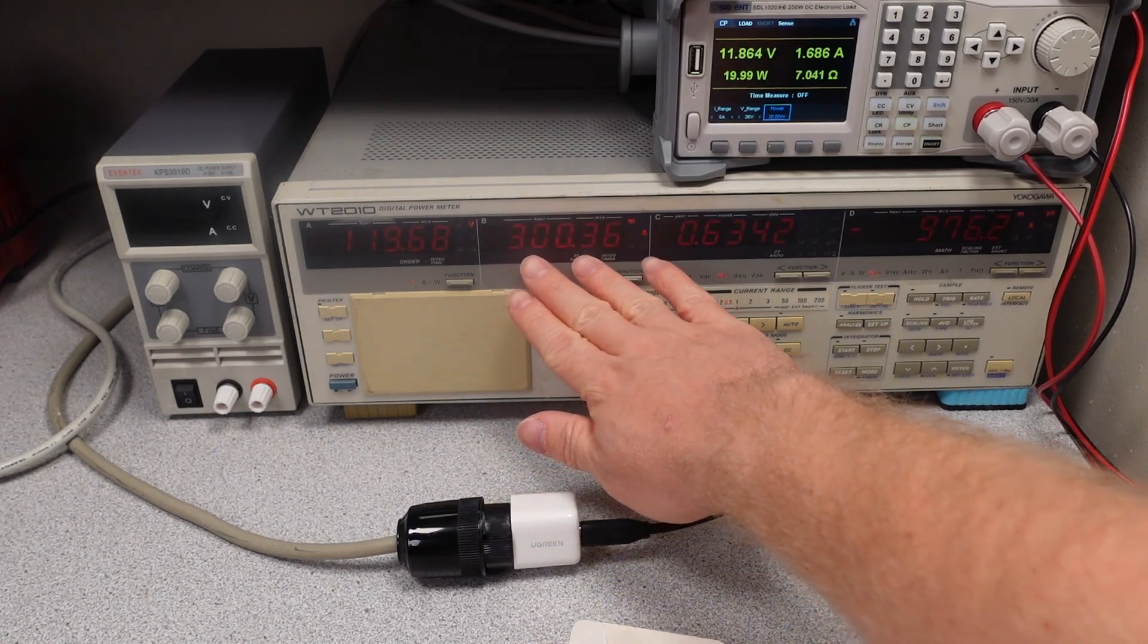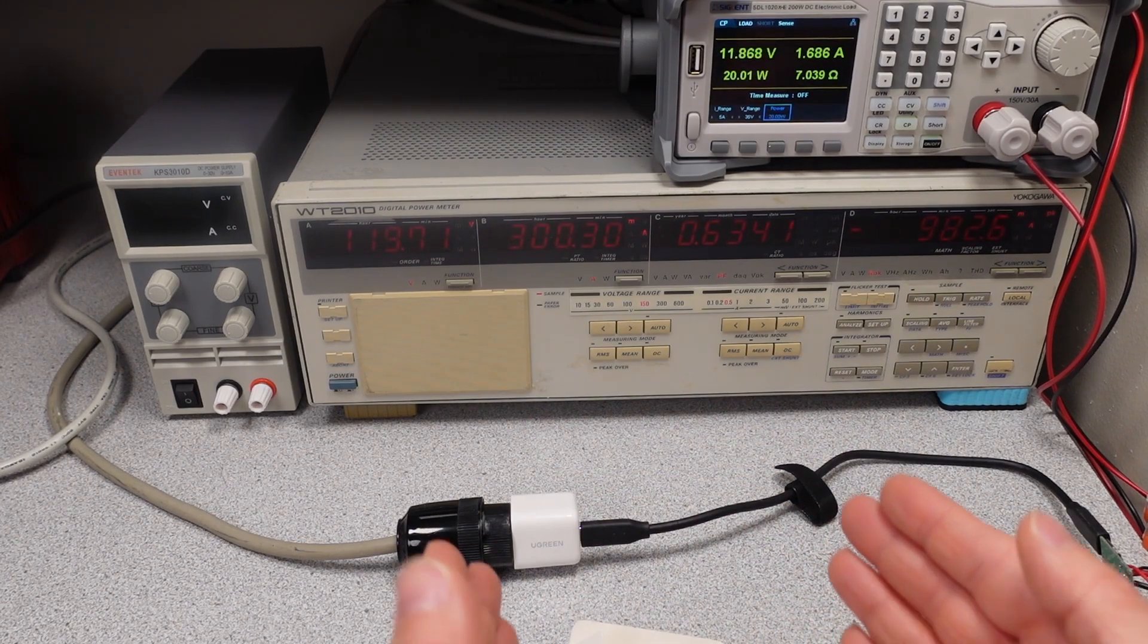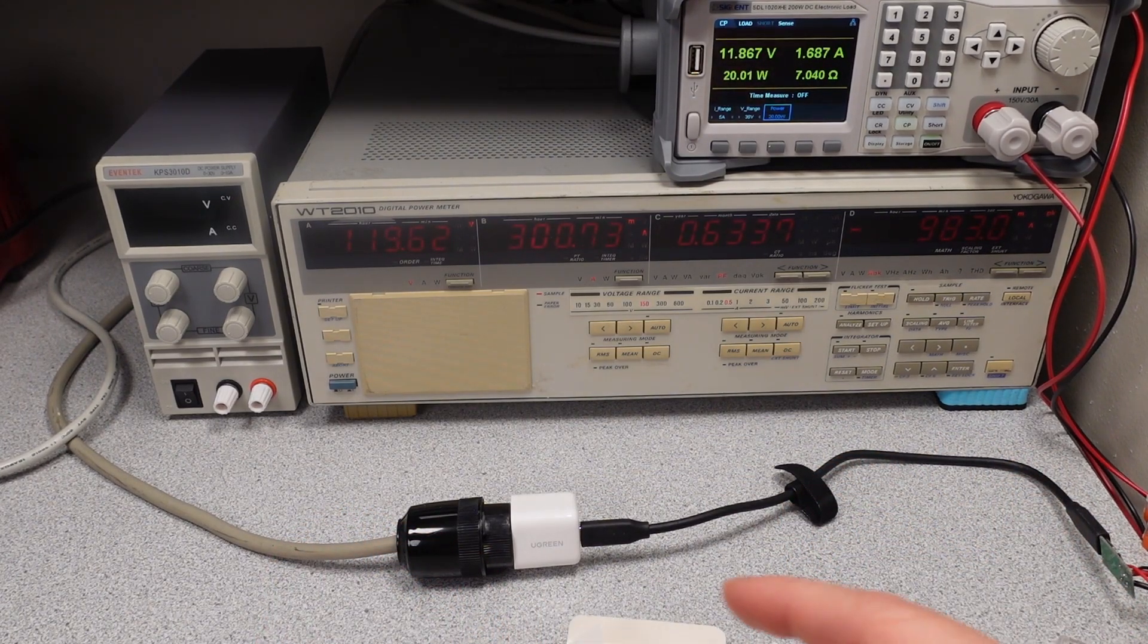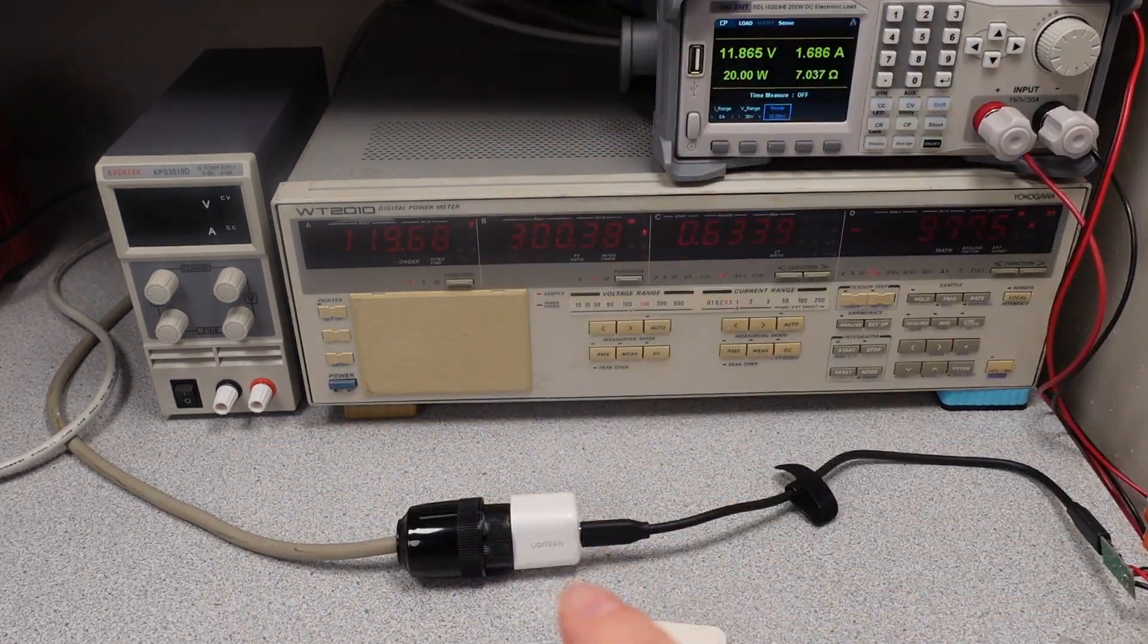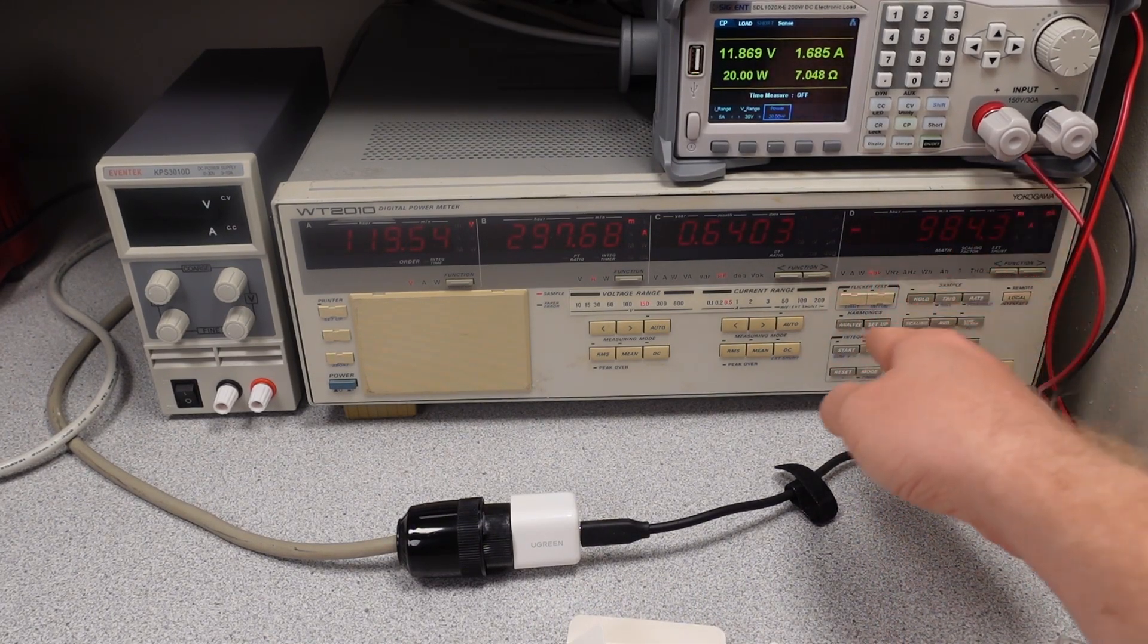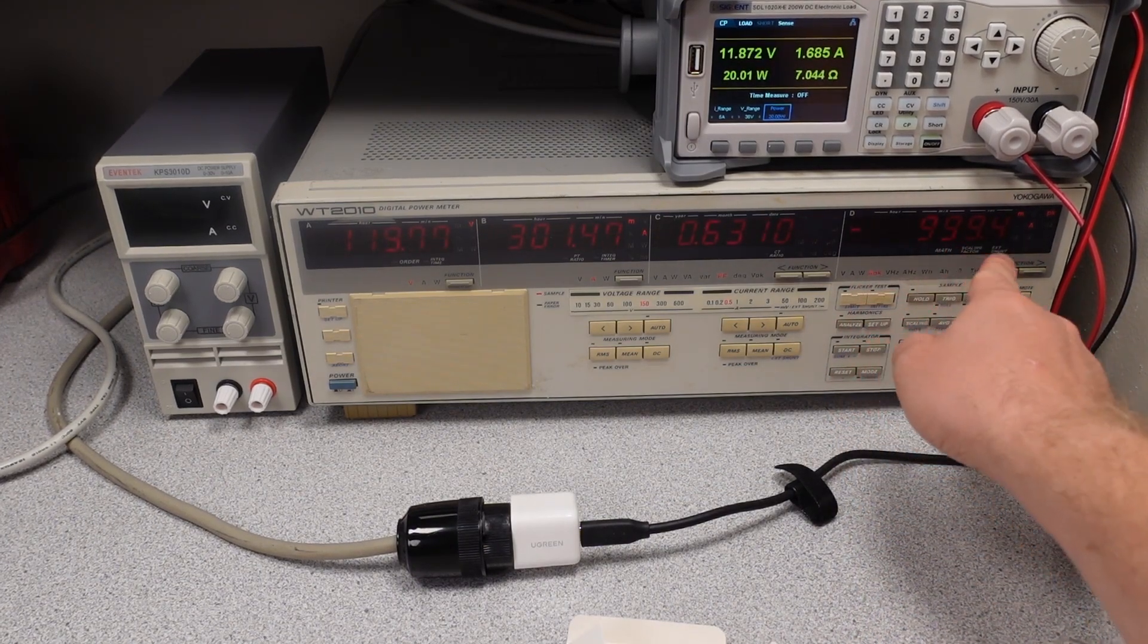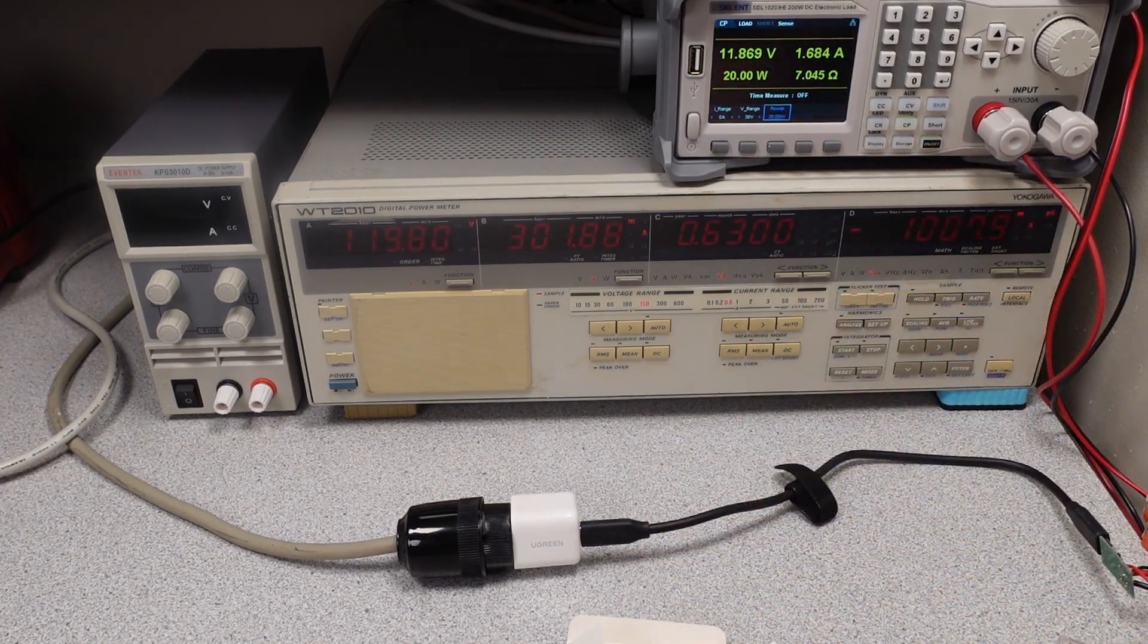Now the RMS current is very low. But the peak current is very high because, again, this is a switching power supply. So it's got a capacitor on the inlet. So it's got a big spike. So the peak current is always going to be much higher than the RMS current. But, yeah, almost an amp for that peak number. So it's definitely a little different than its rating.